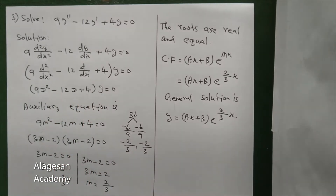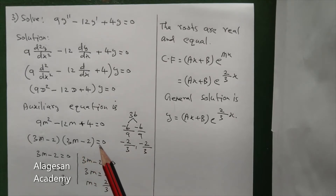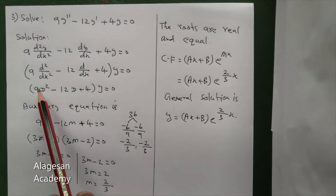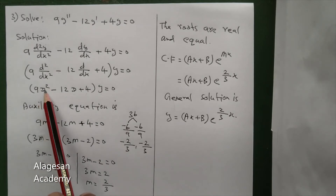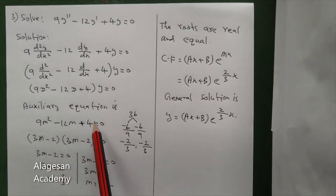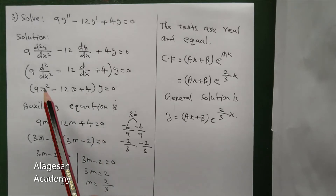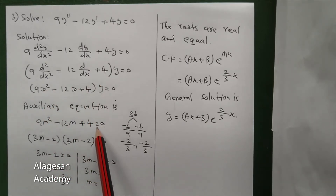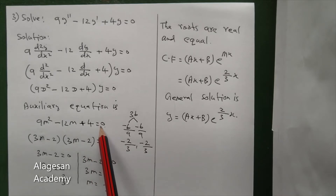Can you understand this? Next, what we have to write? The auxiliary equation. What is the auxiliary equation? Replace D with m and remove y, equal to 0. So: 9m squared minus 12m plus 4 equal to 0.